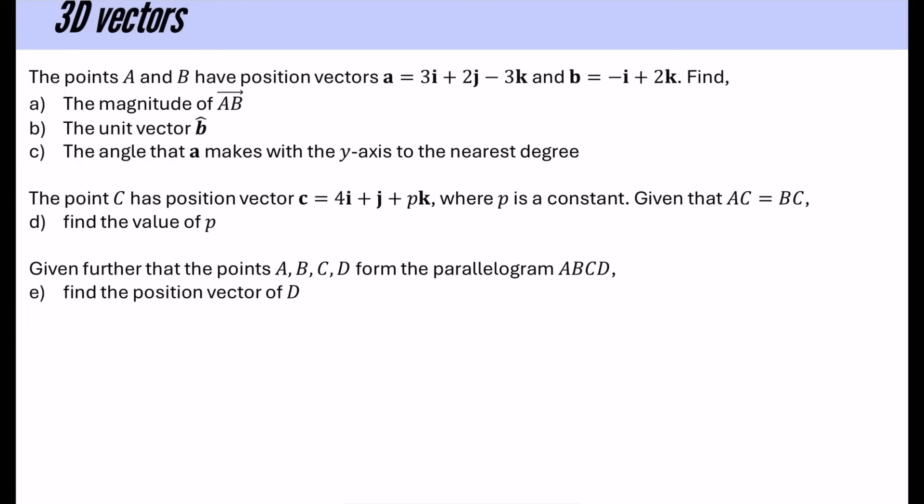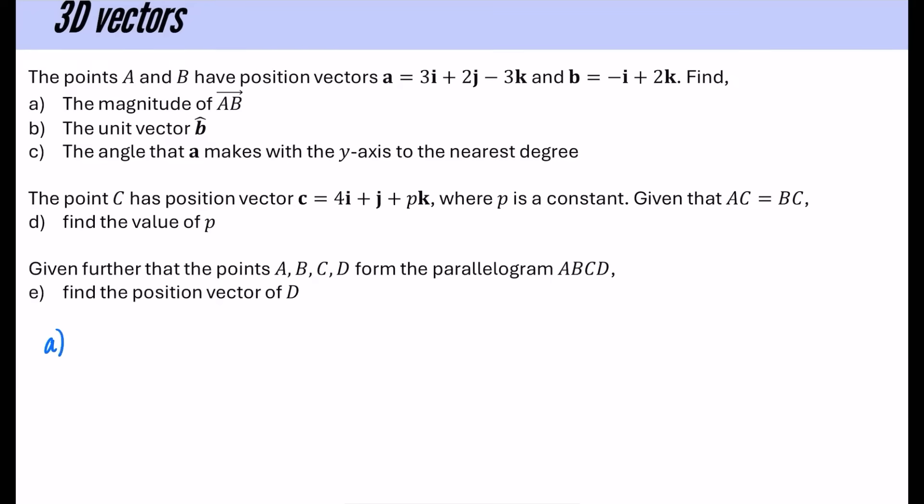So we have the points A and B with position vectors. 3, 2, minus 3. And for B, we have minus i. There's no j, so that'll be a zero. And then for k, there is 2. We're going to find the magnitude of AB. Well, I always, in these questions, I will start off by writing them as column vectors.